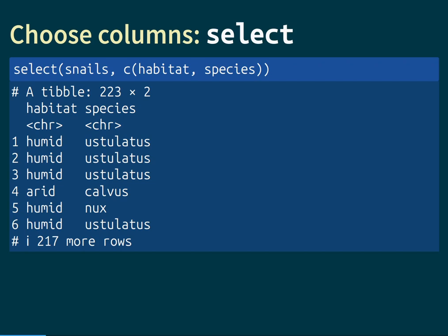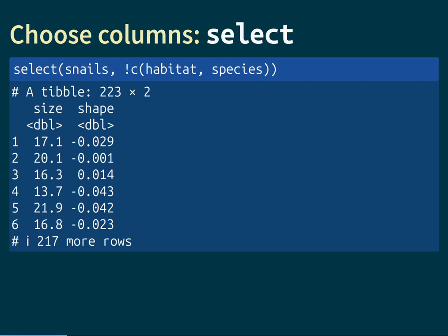It is possible to choose multiple columns at the same time. We just have to specify a vector of column names. If we specify the vector of habitat and species, those two columns will be selected. Additionally, it is also possible to unselect columns by prepending the vector with an exclamation point — similar to the logical NOT operator. So if we prepend the vector of habitat and species with the exclamation point, those two columns will be deselected and we're left with only size and shape.